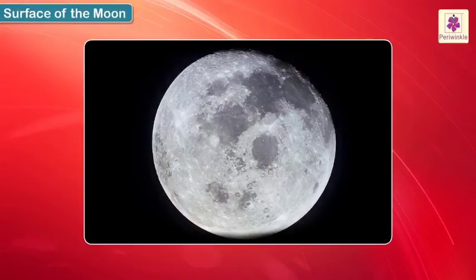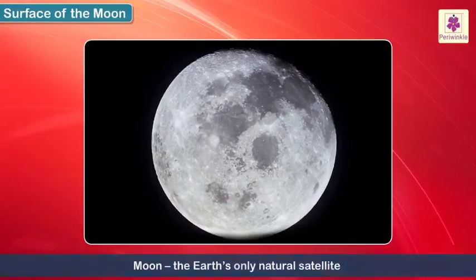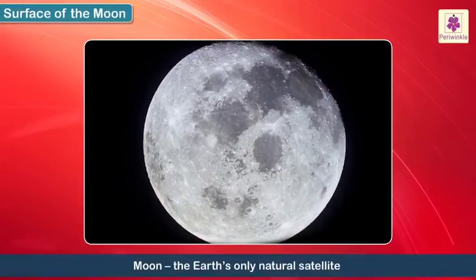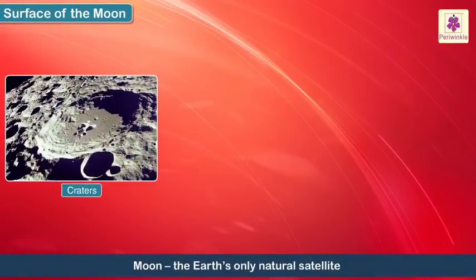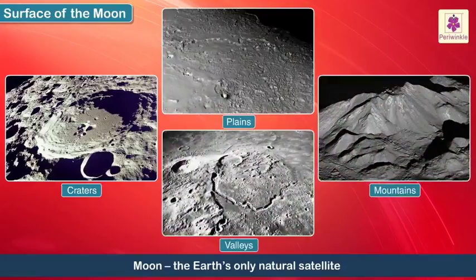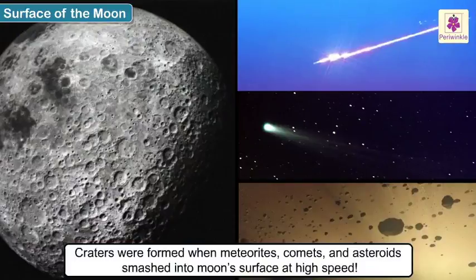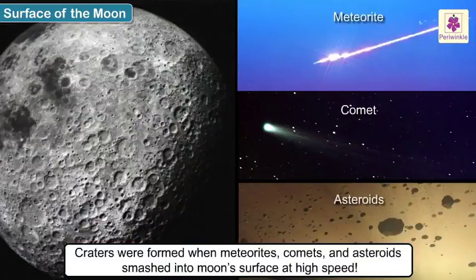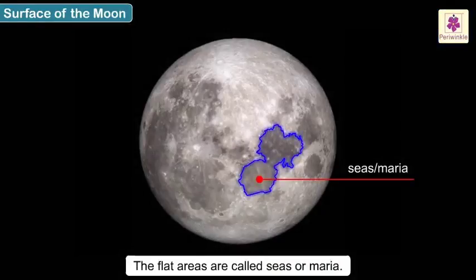Surface of the Moon. The surface of the Moon, Earth's only natural satellite, has many craters, plains, mountains and valleys. Craters were formed when meteorites, comets and asteroids smashed into the Moon's surface at high speed. The flat areas are called